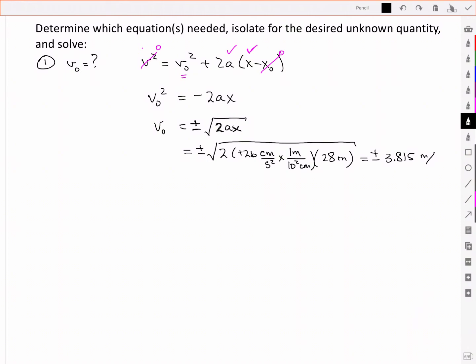What I get out of that is a positive negative 3.815 meters per second. And based on the plot that I showed earlier, I then know that, in fact, the answer I really want is that positive value. So 3.8 meters per second, once I use the correct significant digits.